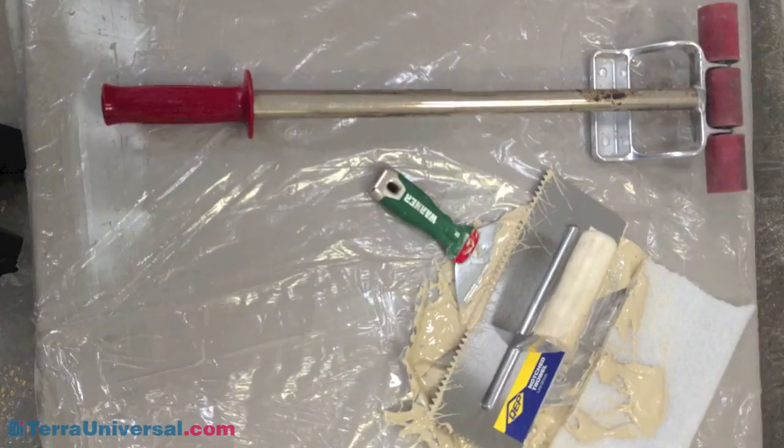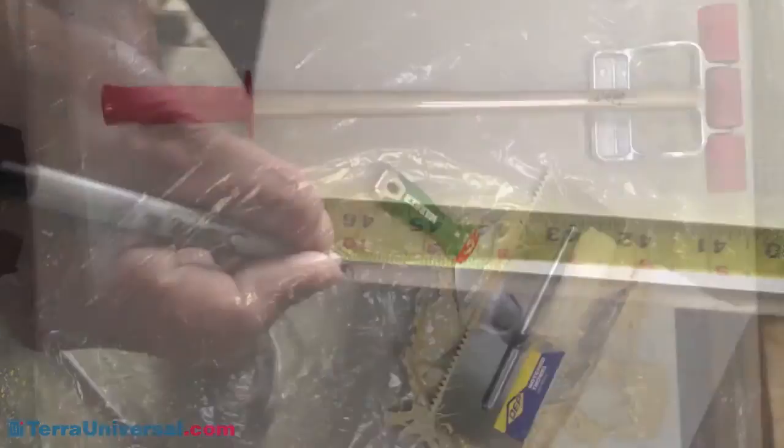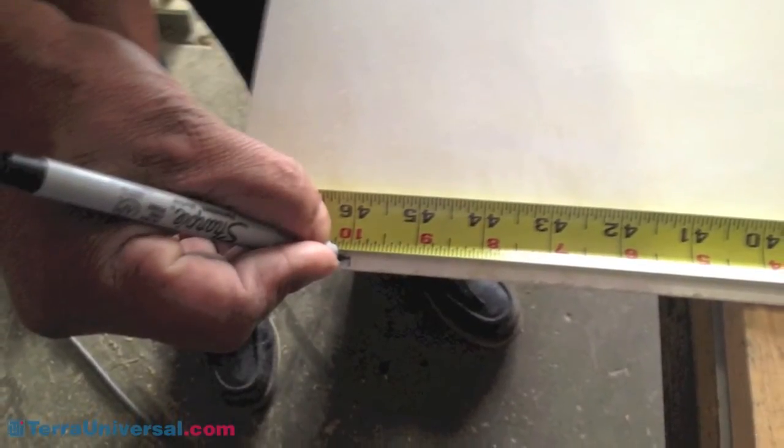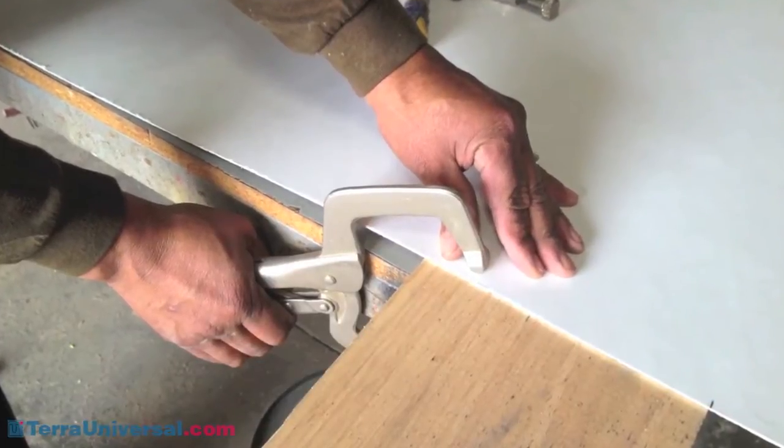The FRP installation manual lists all required tools and supplies. A team of at least three installers is needed. The initial step is to carefully measure and cut required panel sizes, keeping these guidelines in mind.